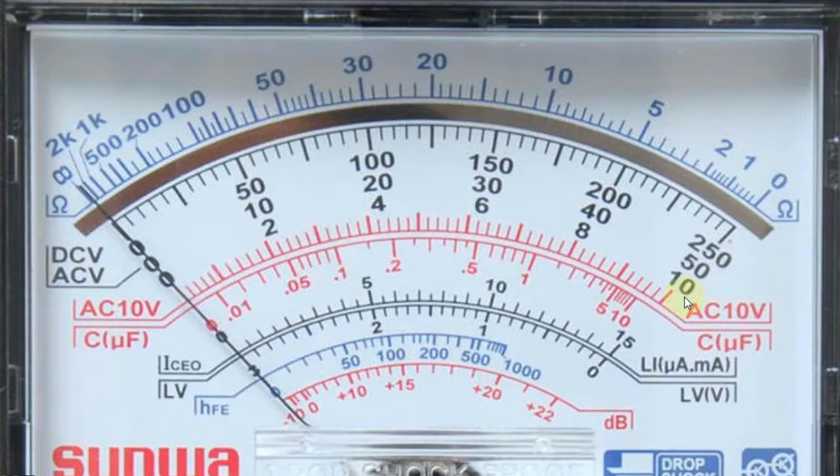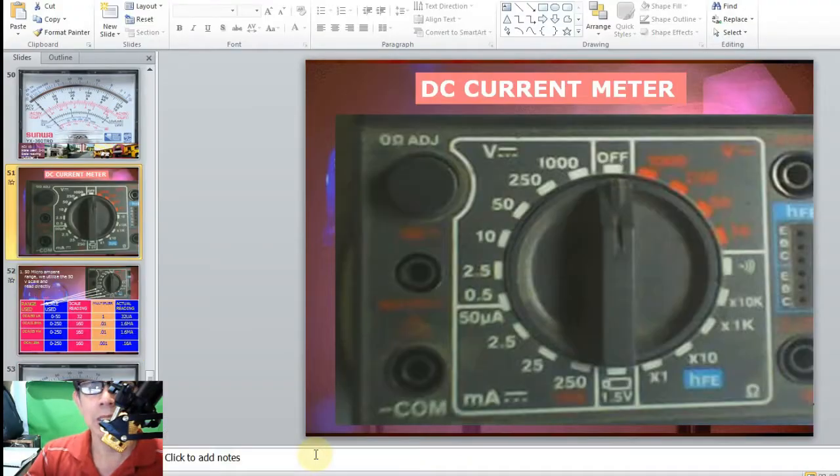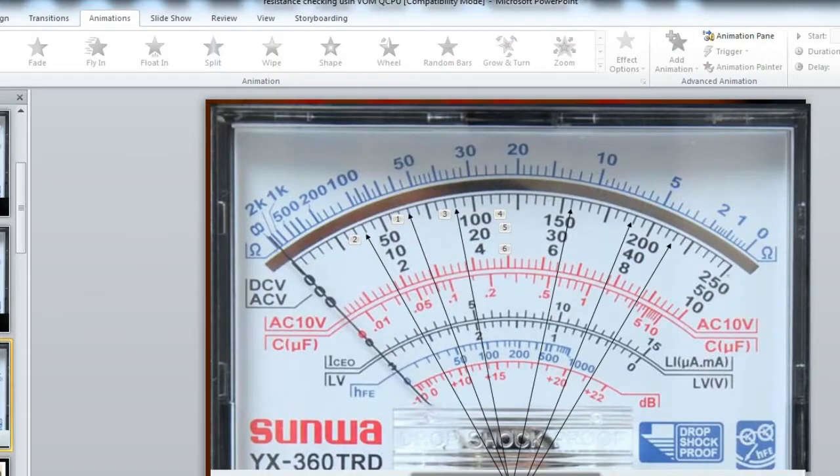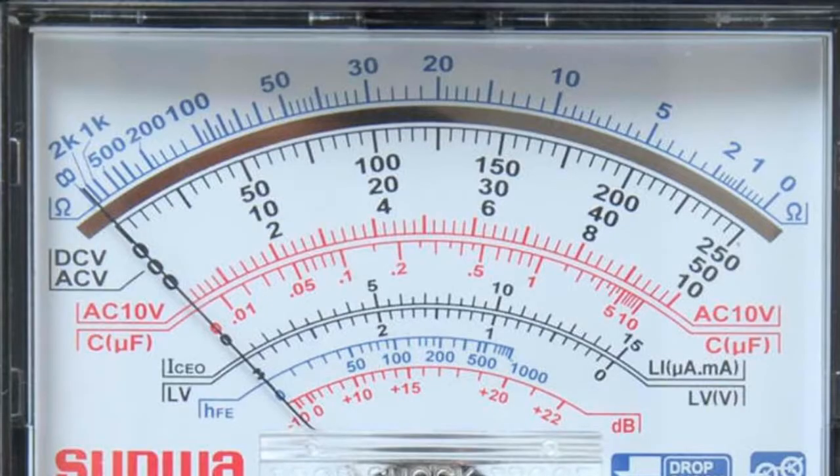Ngayon, makikita natin sa right side yung number na 250, yung 50, tsaka yung 10. Yan yung mga settings na makikita natin sa multitester. Ito yung makikita natin dyan. Meron siyang 0.5, 2.5, 10, 50, 250, and 1000. Okay, ngayon, magsiset tayo dito sa range ng 10 volts. Ngayon, bibilangin natin yung mga number of lines or scale na makikita natin sa 10 volts.